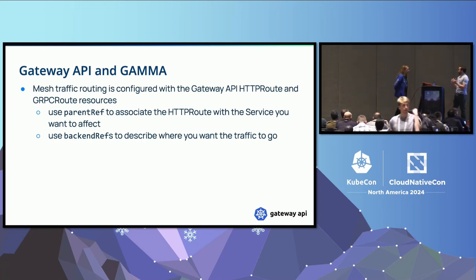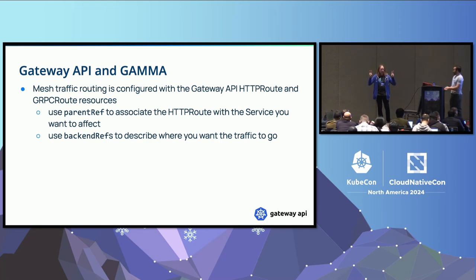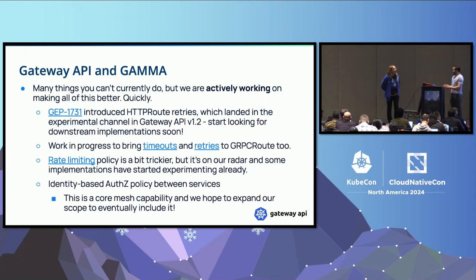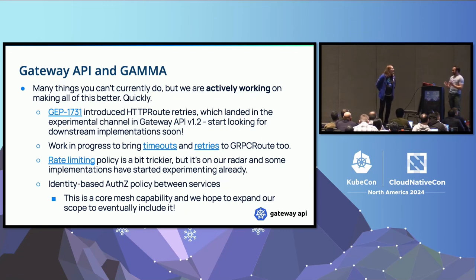For mesh, there are many things you can't currently do that people have come to expect from service meshes, but we're actively working on making this better quickly. Last time this slide talked about timeouts being something new — timeouts have been around for a couple of releases now and actually graduated to standard in Gateway API 1.2 for HTTP route. A recent addition in 1.2 is introducing the concept of retries on HTTP route — this is only experimental and just landed in the experimental channel in Gateway API 1.2, so it's only been around for a couple weeks, but Envoy Gateway might already have it implemented.